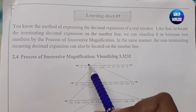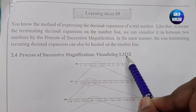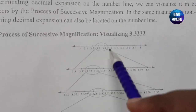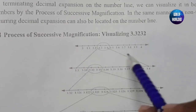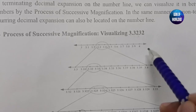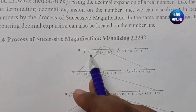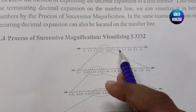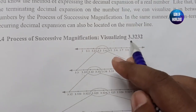So let's start. The question is given as: visualize 3.3232. You can see a number line going from 3 to 4. Between 3 and 4, we get many numbers like 3.1, 3.2, 3.3, 3.4, 3.5, 3.6, 3.7, 3.8, and 3.9.